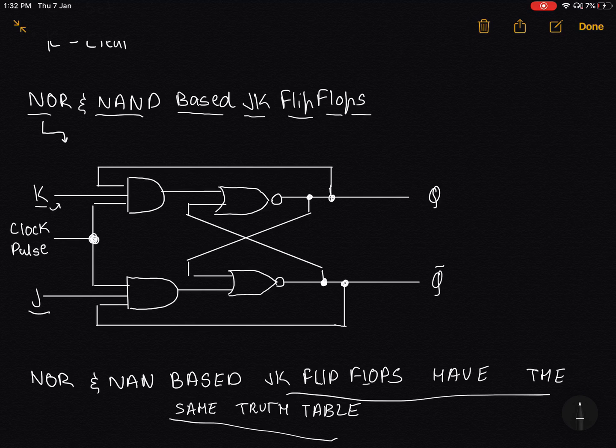JK flip flops are an improvement over SR flip flops because SR flip flops have an invalid combination of S and R where both Q and Q complement are the same. JK does not allow for this. In JK, Q and Q complement do not have the same value. All four combinations for J and K are valid.